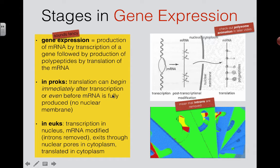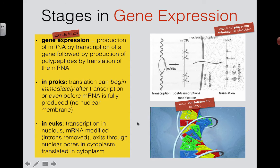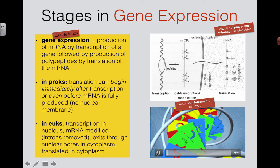In a prokaryotic cell there is no nucleus, so all of this is mixed together — the DNA is right next to the ribosomes. As soon as the mRNA is being made and still being copied, a ribosome could already be attached to it doing translation. Those are the two main differences between prokaryotes and eukaryotes in terms of how their genes get expressed.